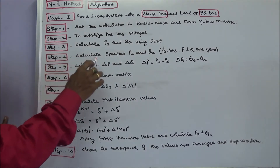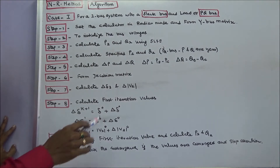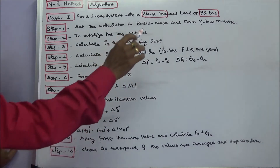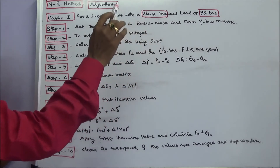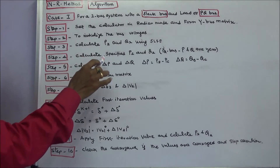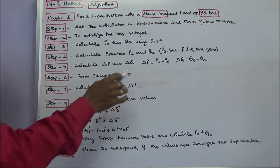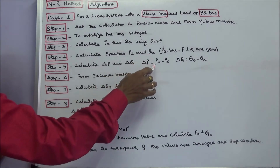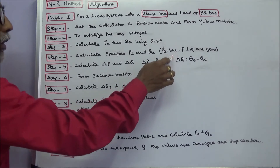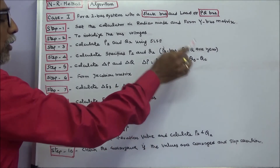Step 4: calculate the specified real power and reactive power. In the case of a load bus or PQ bus, real power generation and reactive power generation are zero. Step 5: calculate change in real power and change in reactive power. Change in real power is real power specified minus real power calculated. Change in reactive power is specified reactive power minus calculated reactive power.